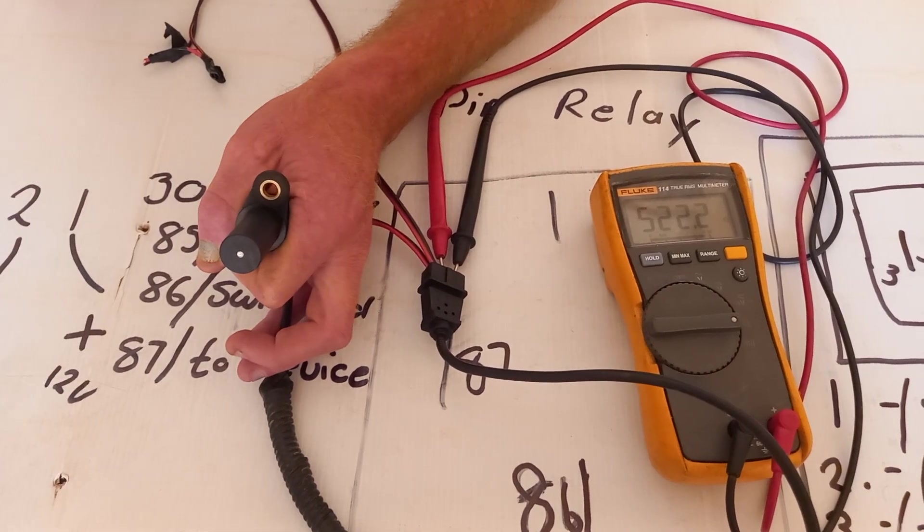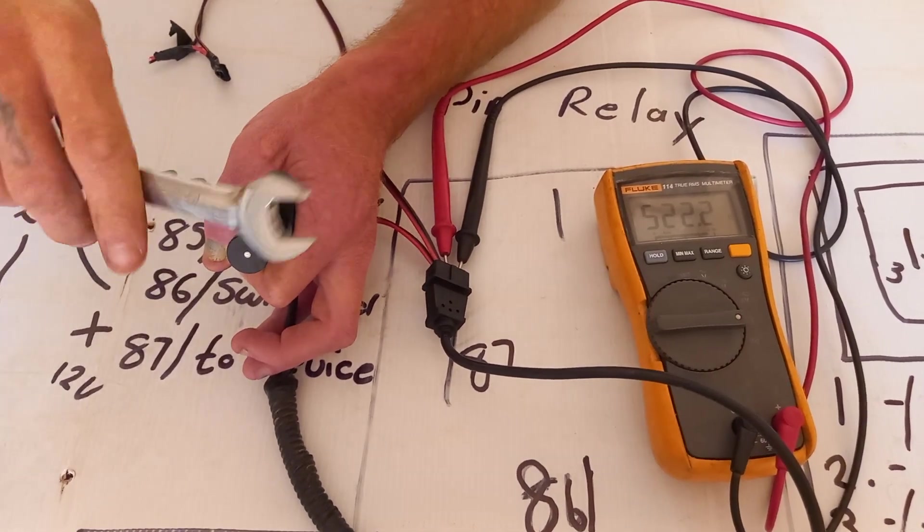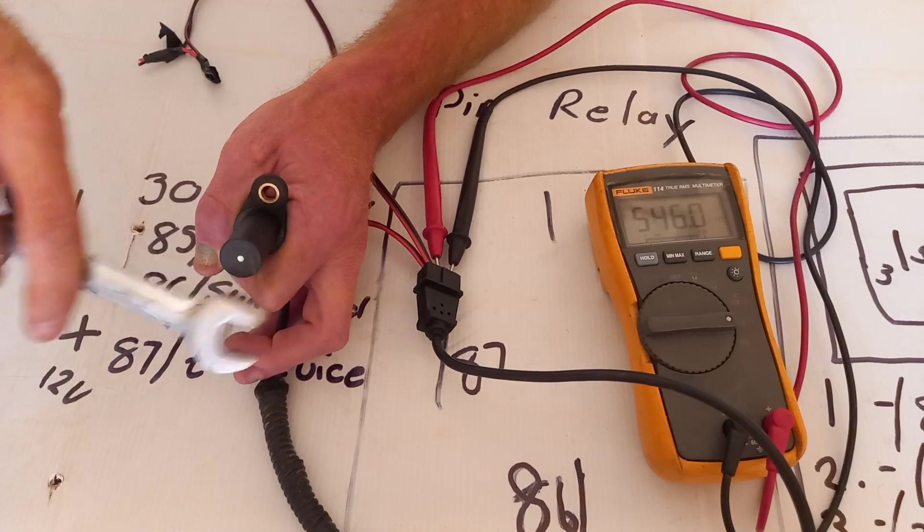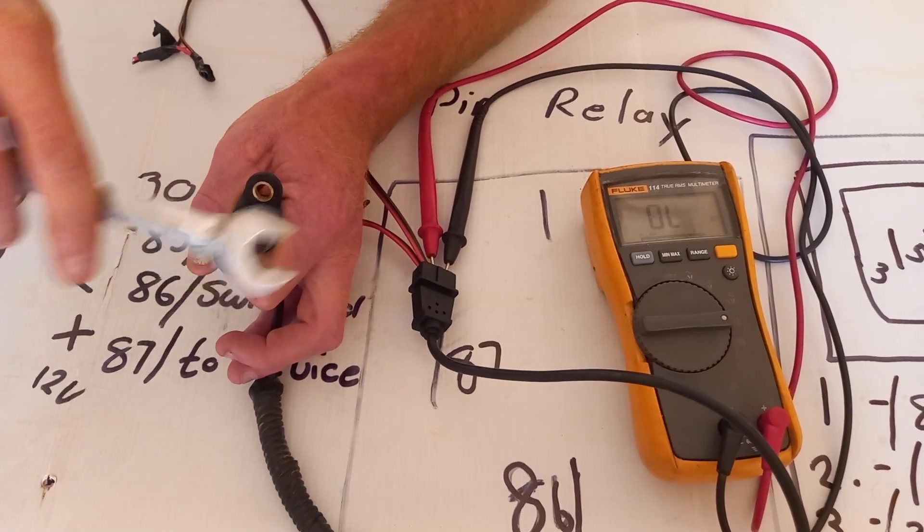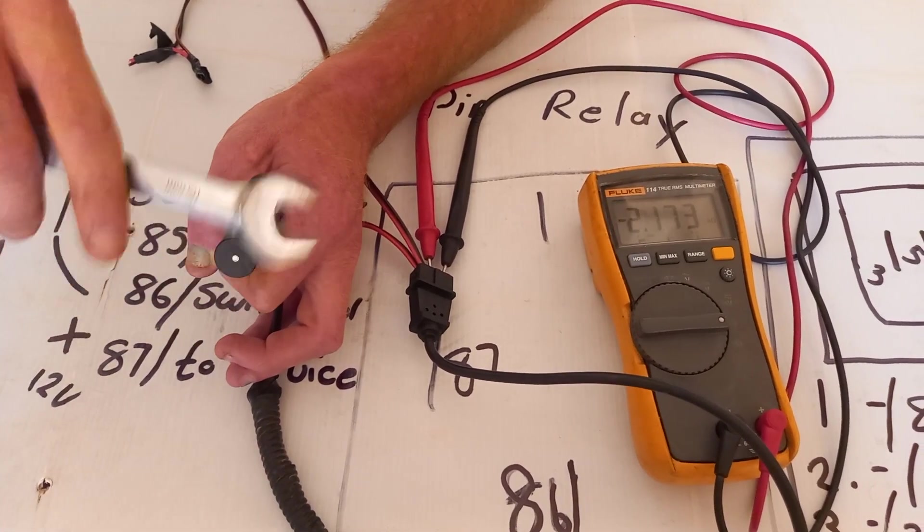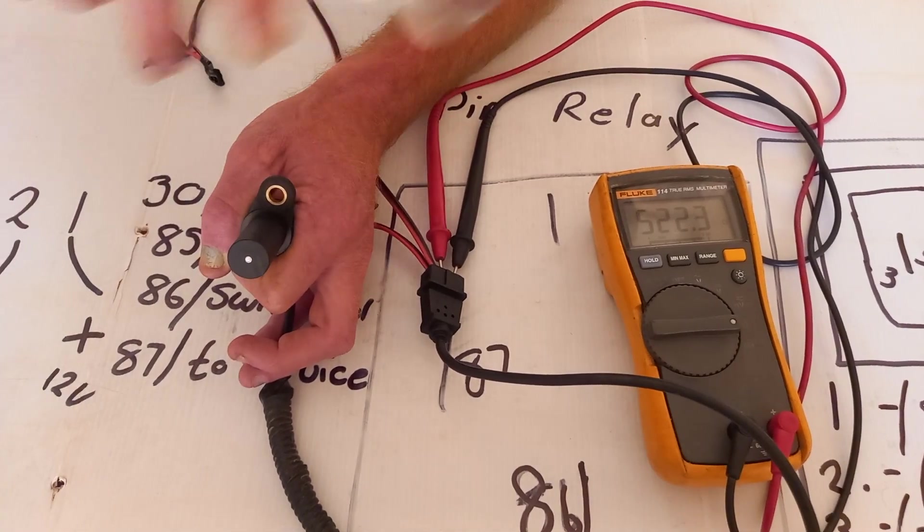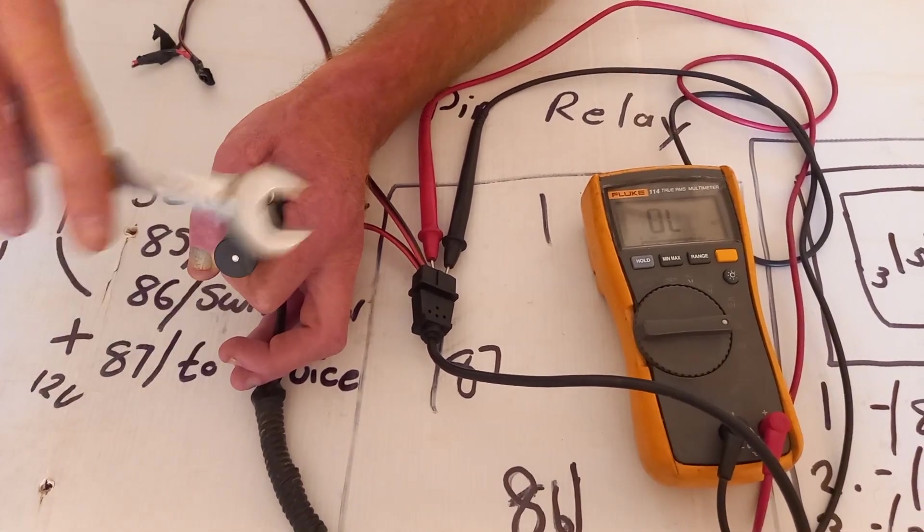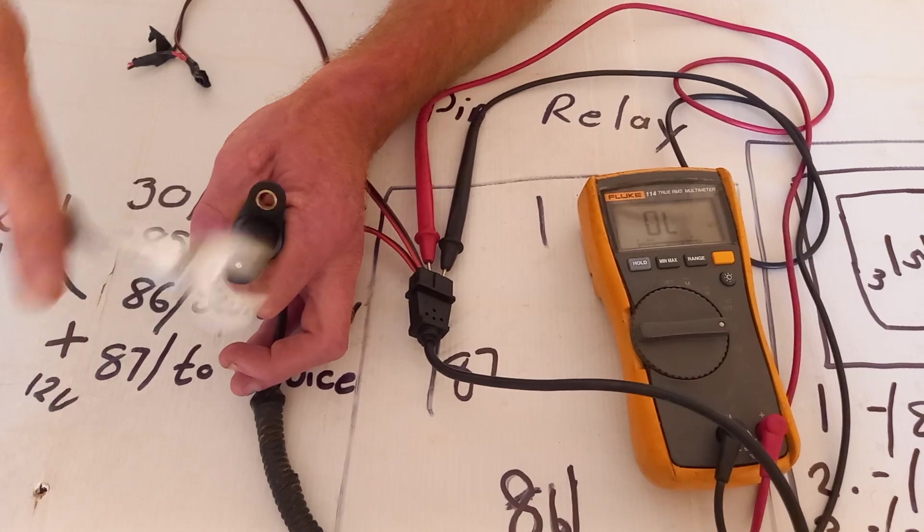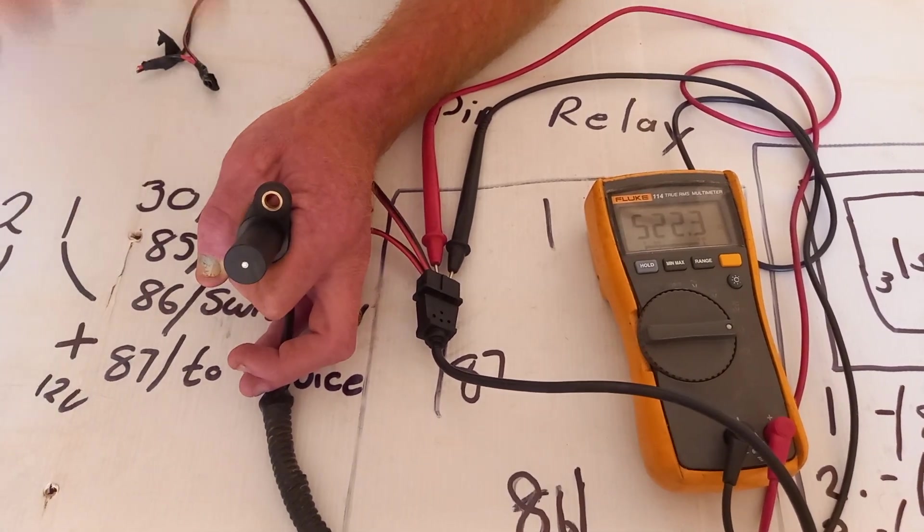So on ohms, I'm going to move the spanner also close to it. You can even touch it a bit and you'll see that there is a fluctuation. That OL that shows there shows open circuit. That's supposed to be happening, so you've got a healthy crank sensor here.